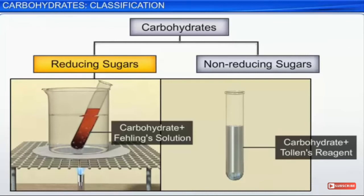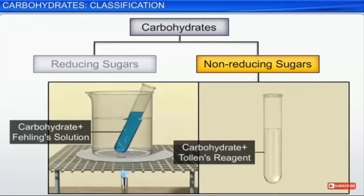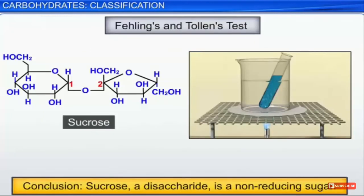Carbohydrates can also be classified as reducing sugars and non-reducing sugars. Reducing sugars give the Fehling's test and the Tollens' test. Non-reducing sugars do not give the Fehling's test and do not give the Tollens' test.